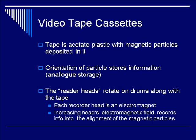One common way that ultrasound clips were once stored was on videocassette tapes. In this technology, the tape is acetate plastic with magnetic particles, or dipoles, deposited in the tape. The orientation of the particles stores information, in an analog format, not a digital format. The reader heads on the videocassette tape rotate along drums along with the tape. Each recorder head is an electromagnet. By increasing the electromagnetic field of the recorder head, one can record information into the alignment of those magnetic particles.